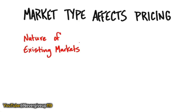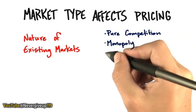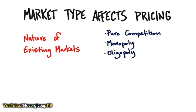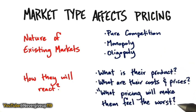Market type also affects pricing. In an existing market, you need to think about competition — is there a monopoly, a duopoly, dominant players shaping pricing? You want to understand their products, costs, and prices, and what pricing will make them feel worst. Can you bracket them, undercut them, niche them, or apply a blue ocean strategy? In an existing market, you want pricing as a strategy, not just a reaction.